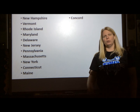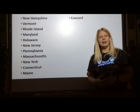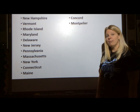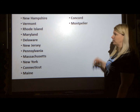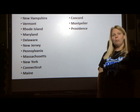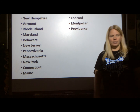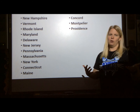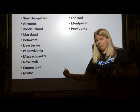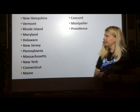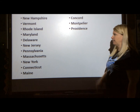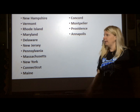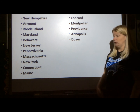New Hampshire's capital is Concord — so when you hear Concord, New Hampshire, you should automatically think that's the capital. Vermont's capital is Montpelier — Montpelier, Vermont. Rhode Island is Providence — every time I say Providence, I think of Kentucky basketball. Rick Pitino came from Providence before he went to Louisville. Maryland's capital is Annapolis, and that's where you find the Naval Academy. Delaware is Dover — Dover, Delaware.